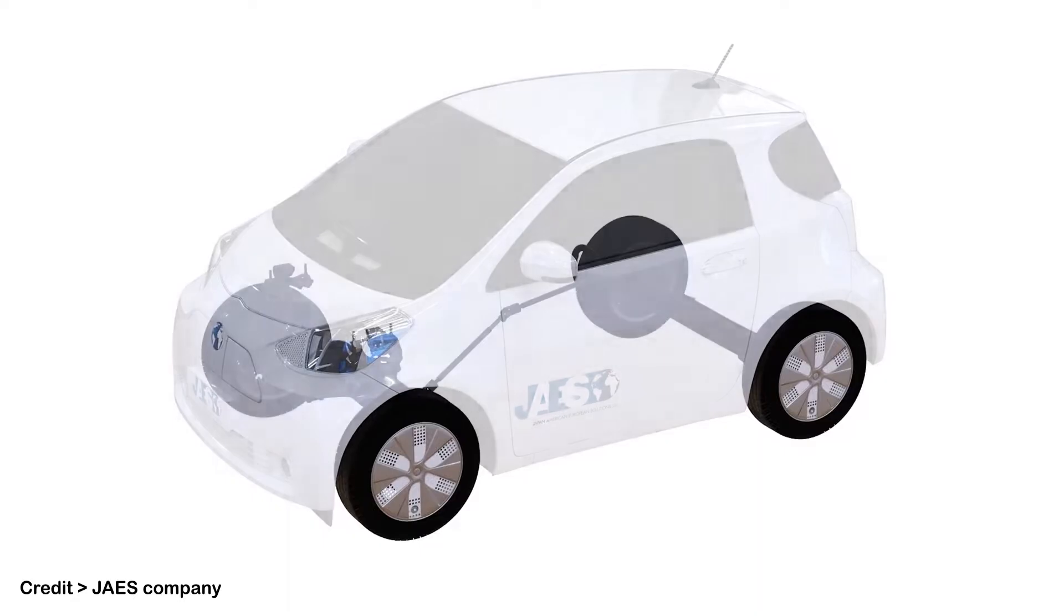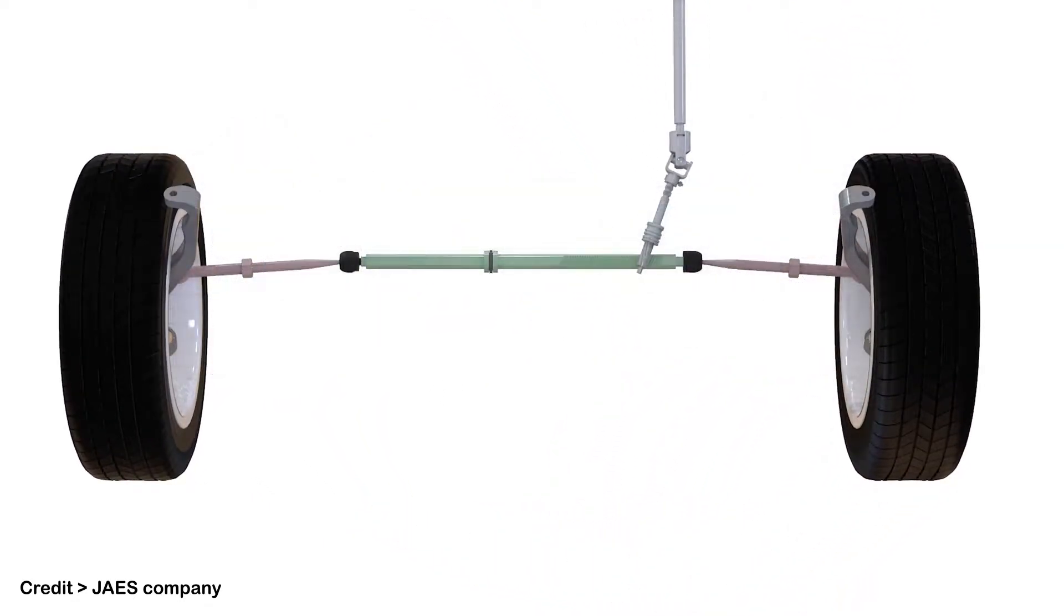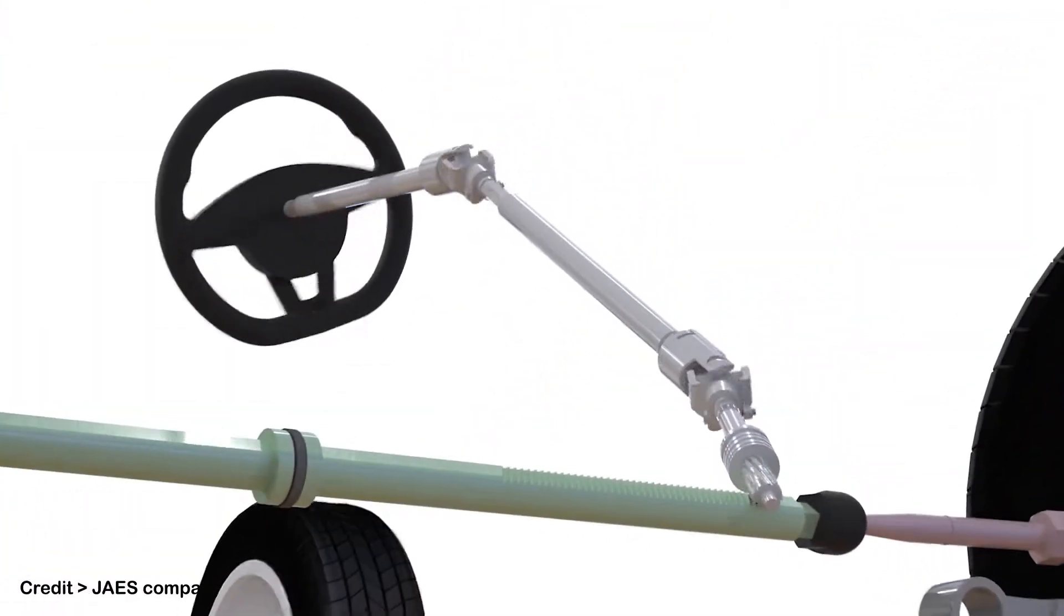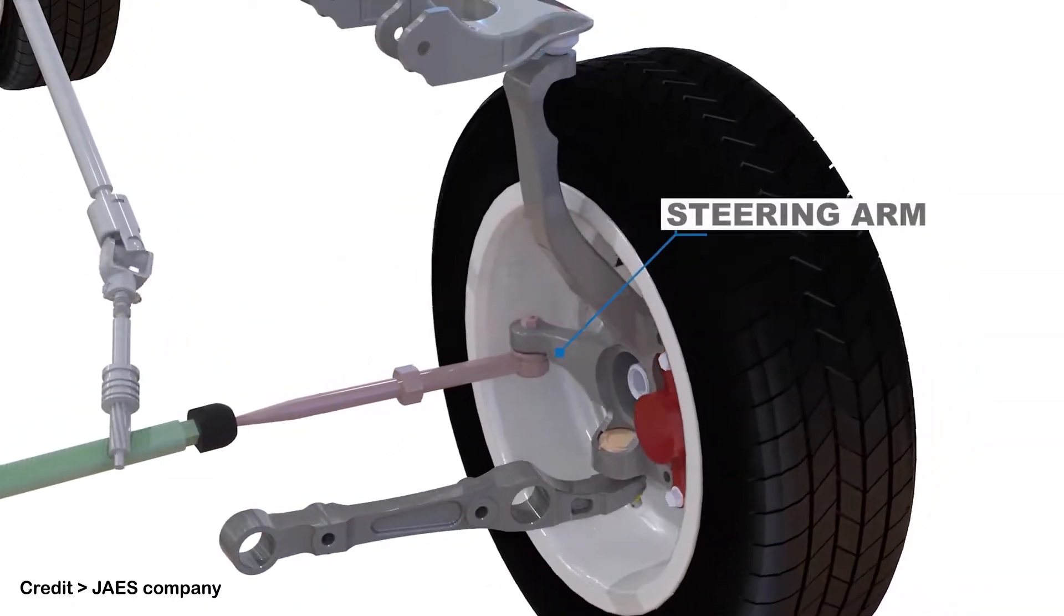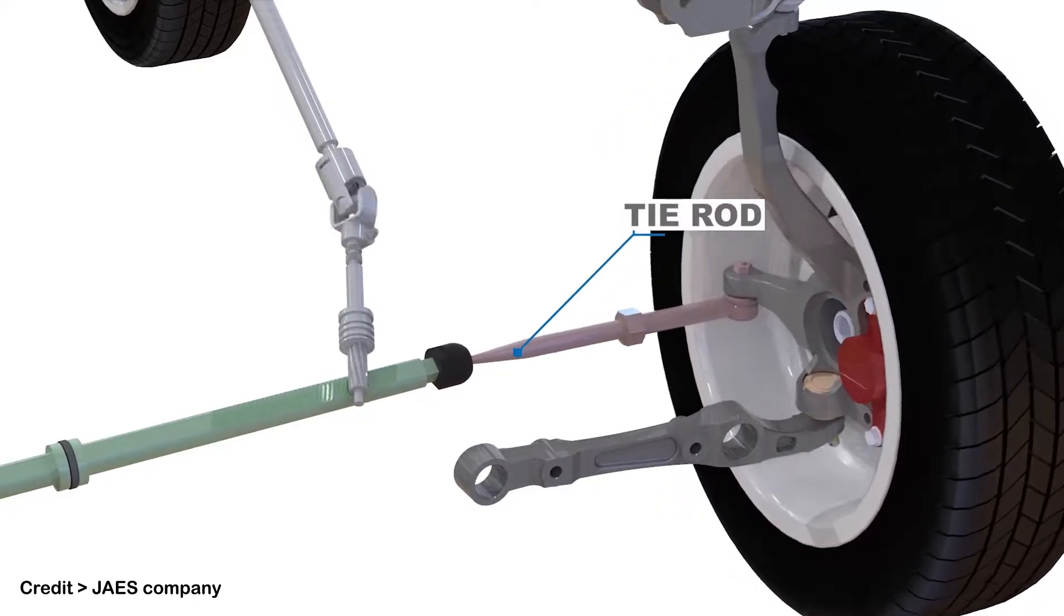For example, in our car we have to turn the steering wheel, which is connected to a rack and pinion system. When we turn the steering wheel, our wheels turn. But if we use mecanum wheels, we don't need any extra mechanism. Just with the speed of motors, we can control our vehicle in any direction.